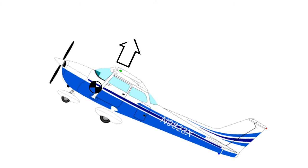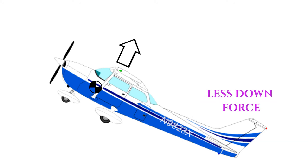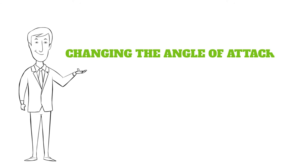But when you slow the airplane and you increase the angle of attack, the two are closer together and the tail is producing less downforce. The airplane is less stable in this condition, and it can be much more difficult to control. So by changing the angle of attack, we can also affect controllability.